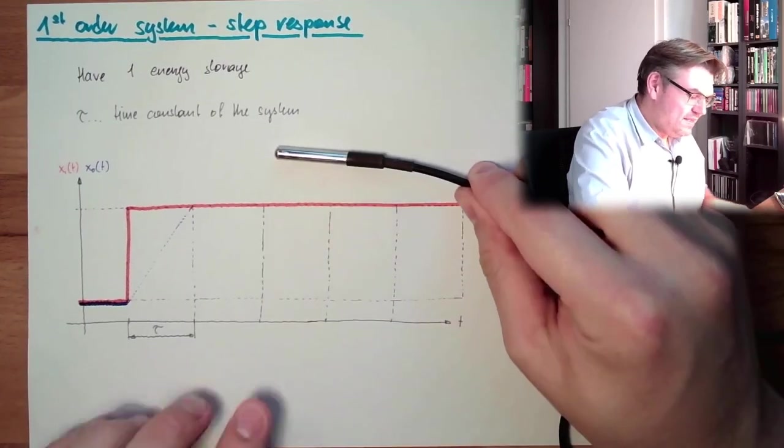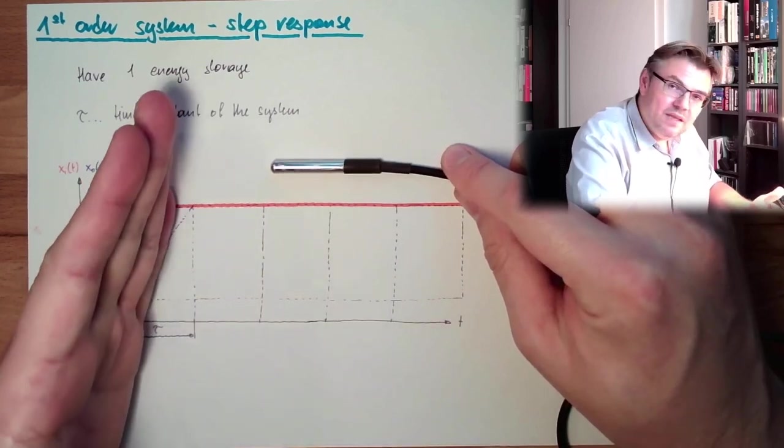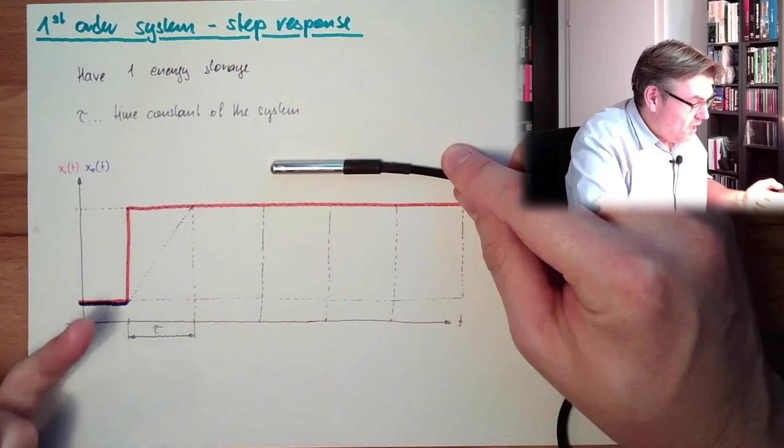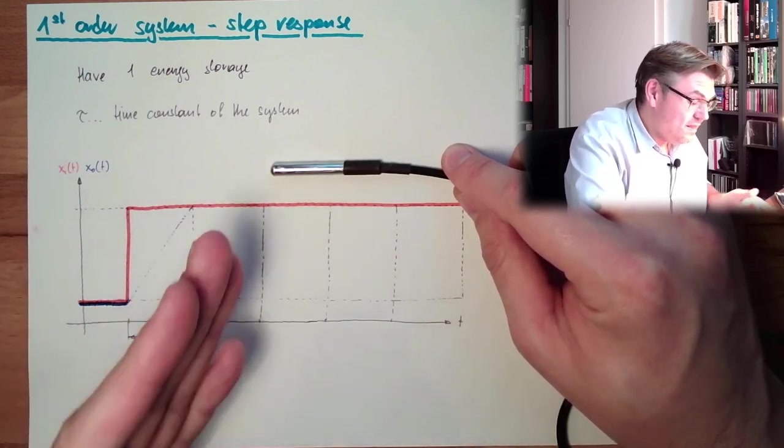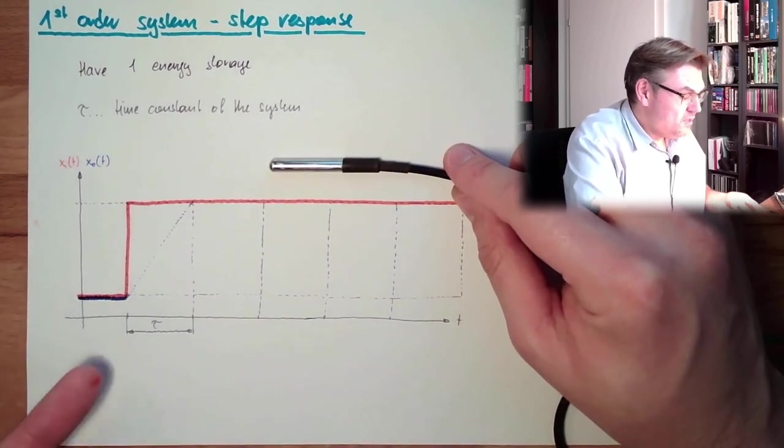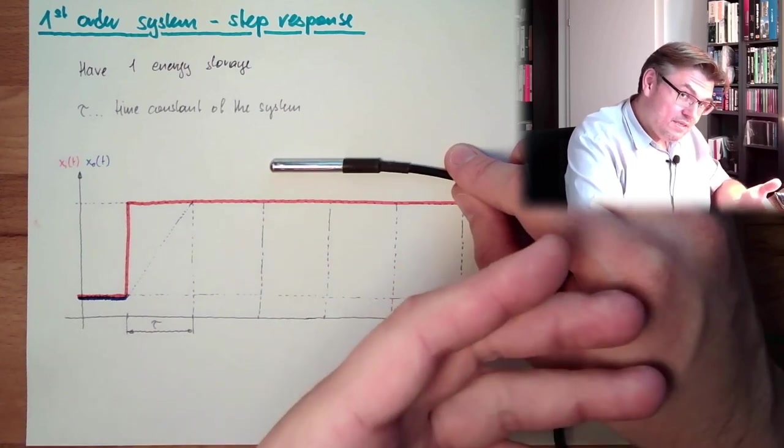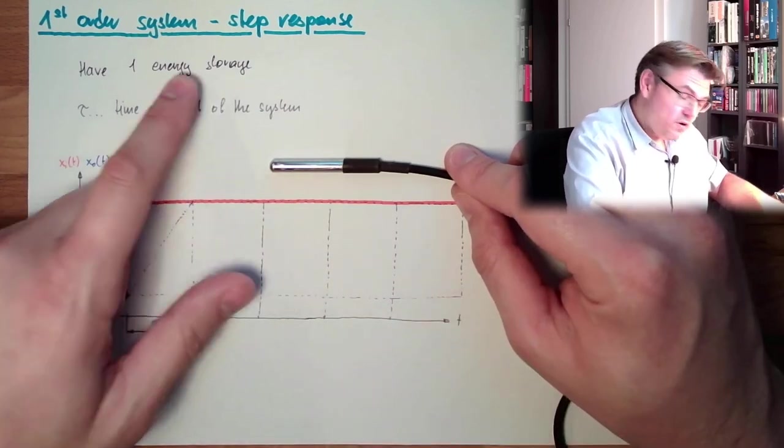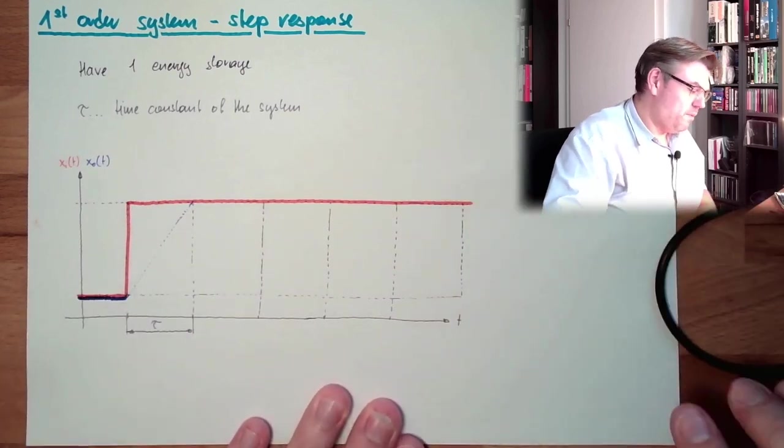If the mass is very low, tau will be short, because then we will heat it up easily. If the mass is very high, tau will be long. Then, the mass, it takes a while to heat it up. Simply, so tau is big if there are big storing capacities of this one energy storage, and tau is small if there are small storage capabilities.